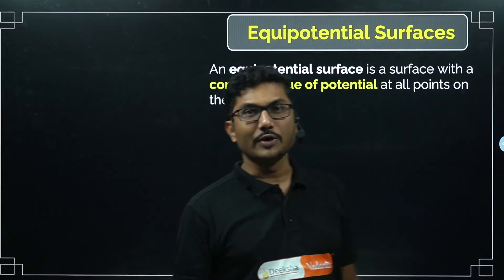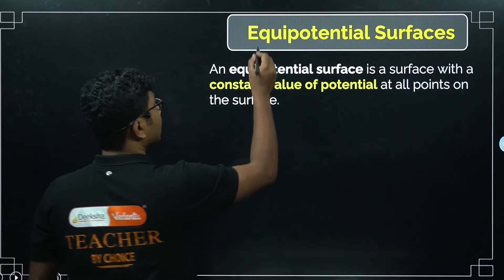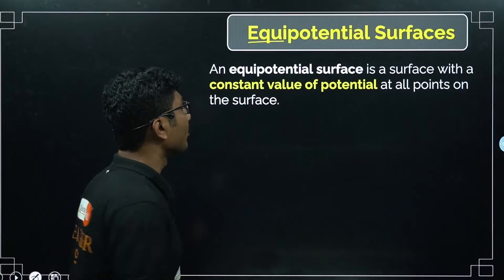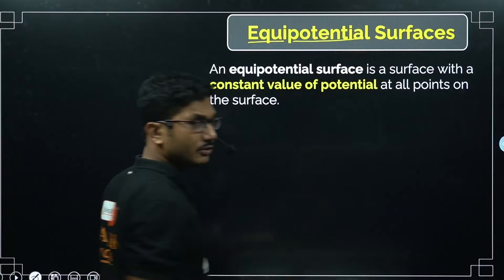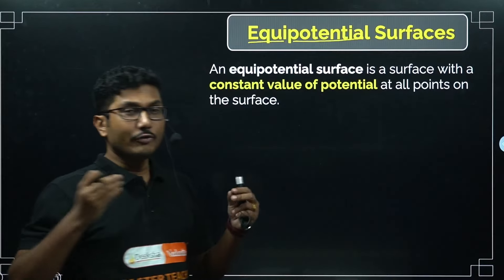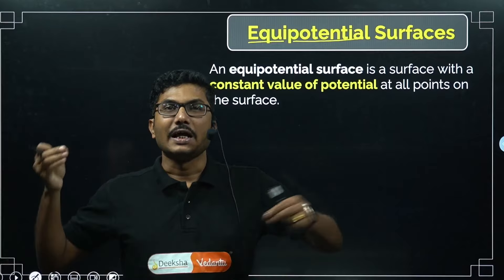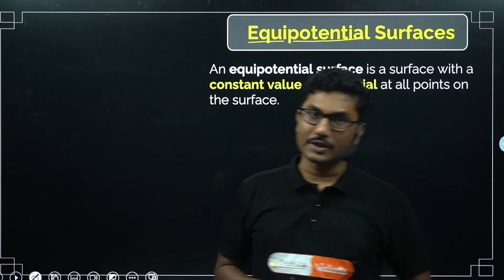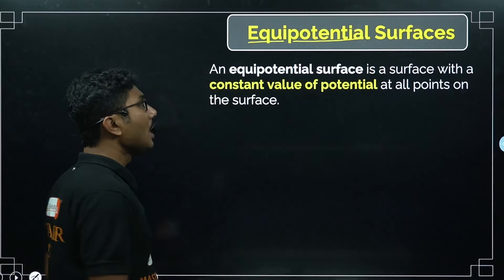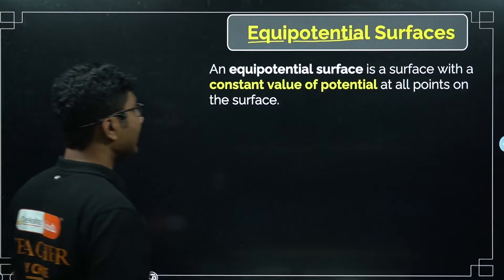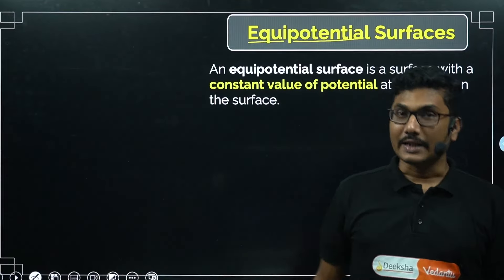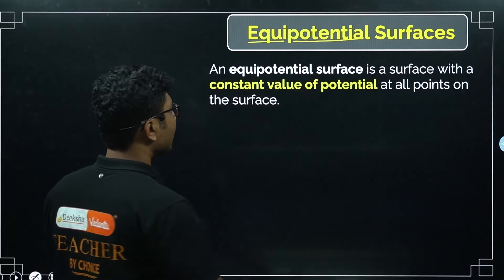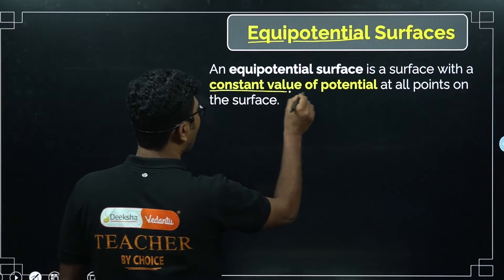Let's start with equipotential surfaces. 'Equi' means equal, and potential you already know. So equipotential means a surface where all points are at equal potential. An equipotential surface is a surface with a constant value of potential — potential is constant throughout the surface at all points on it.